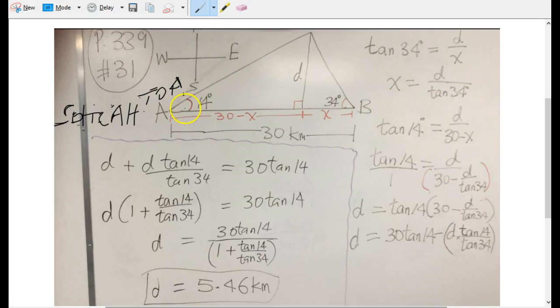We multiply x by both sides and divide both sides by tan 34. We keep it there because we have two variables, we can't really solve for it.